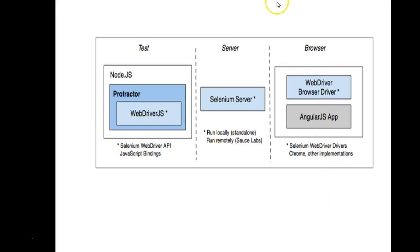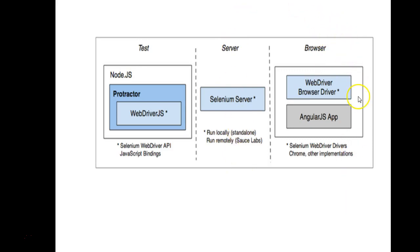To sum up the Protractor architecture: there are three layers. One is the test layer, which contains the test cases we write in JavaScript. The second is the server layer, which consists of the Selenium server. The third is the browser layer, which consists of different browser drivers and the application running on the browser. It's a three-layer architecture.